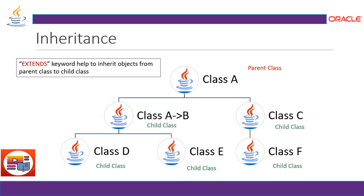Inheritance is like a parent class and a child class with a structure and hierarchy. For example, if a father has a health condition like blood pressure, the son is going to be at high risk of that hereditary condition. Inheritance can be implemented with the 'extends' keyword, which helps to inherit objects from a parent class to a child class.